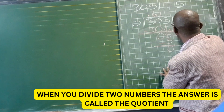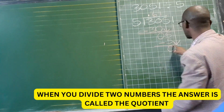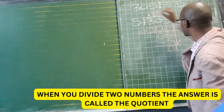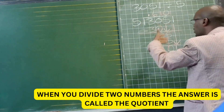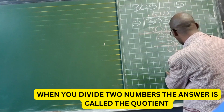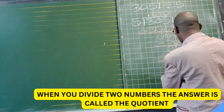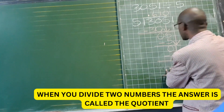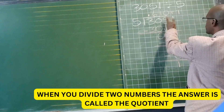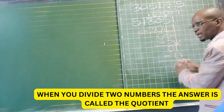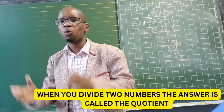Repeat the rules: 5 goes into 5 one time. Multiply: 5 multiplied by 1 gives 5. Subtract: 5 minus 5 gives 0. Bring down the 1 — now we have 1. Five goes into 1 zero times, because 1 is smaller than 5. Multiply: 5 multiplied by 0 gives 0. Subtract: 1 minus 0 gives 1. No number left to bring down — we are done. Our answer is 610 with a remainder of 1. Five goes into 3051 six hundred and ten times with a remainder of 1.